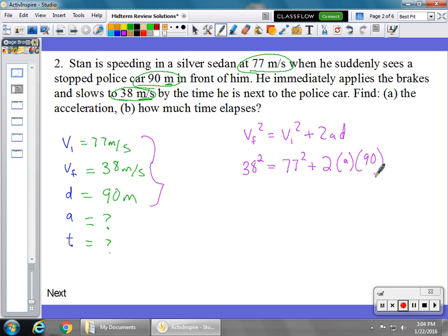I recommend going through and doing all the squareds first, right, before starting to rearrange your equation. This is going to give you 1,444 equals 5,929 plus 2 times 90 is 180 times A. We're going to bring the 5,000 over, which means we got to subtract that from both sides first. Once you subtract that, it's going to give you negative 4,485 equals 180 times acceleration.